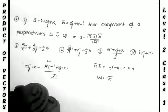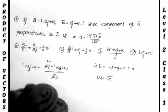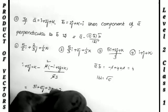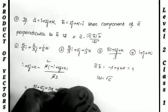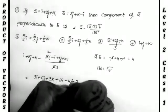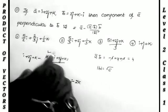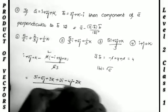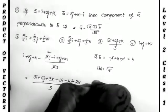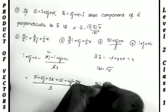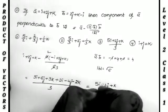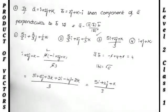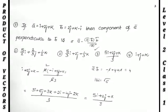Substituting into the formula: ā − (4/6)·b̄. Taking LCM: (3i + 6j + 3k)/3 minus (−2i + 4j + 2k)/3 ... minus of those terms gives (3i + 6j + 3k + 2i − 4j − 2k)/3 = (5i + 2j + k)/3, which is the third option.